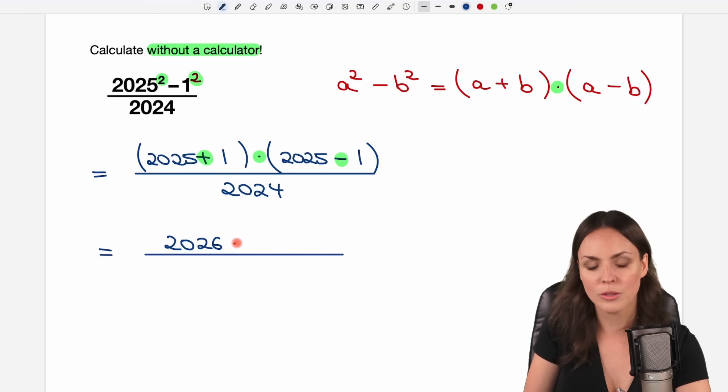Then we have the multiplication symbol, and here 2025 minus 1 just equals 2024. And we still have our 2024 in the denominator.